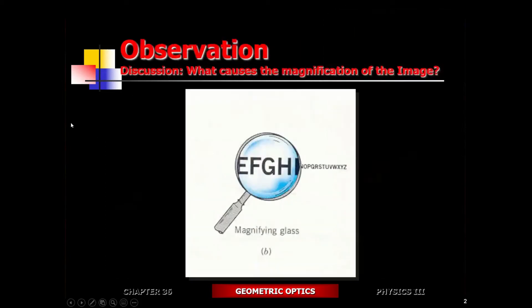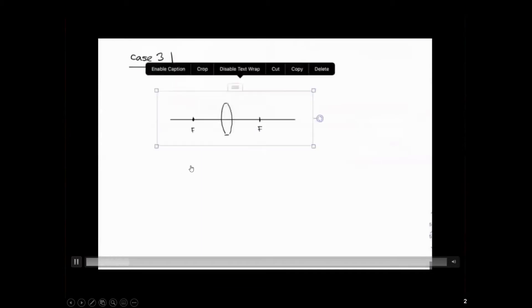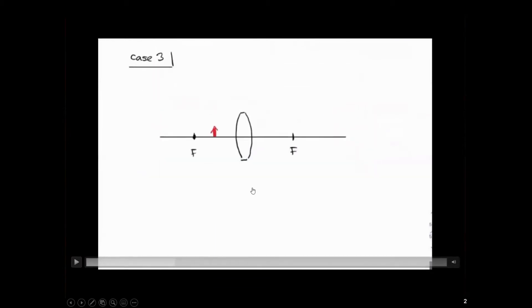It's the same concept. Magnifying glass — how does that work? So you take something small and you're able to magnify it. This is going to take us to case number three. For us to be able to magnify something, you have to place the object within the focal length.